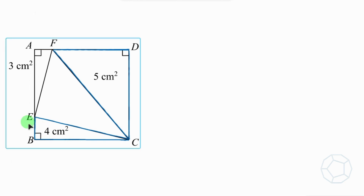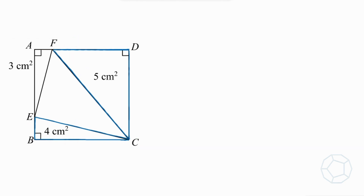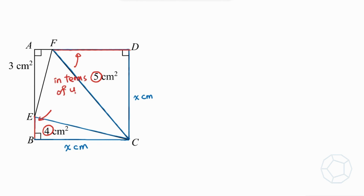First of all, we're going to focus on the two blue triangles EBC and triangle FDC. The reason is that they have something in common — BC and DC are the side lengths of the square. Let's let them be x cm. Next, let's focus on the two sides EB and FD, and I'm going to label them in red.